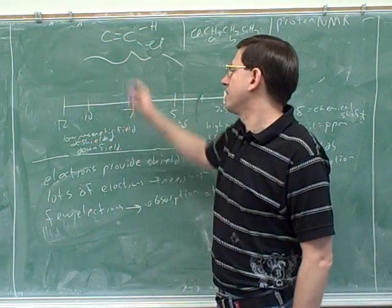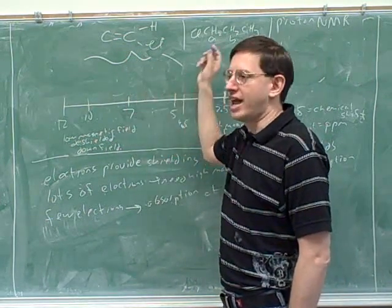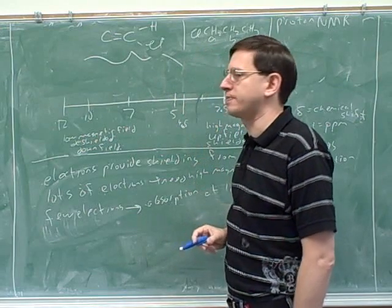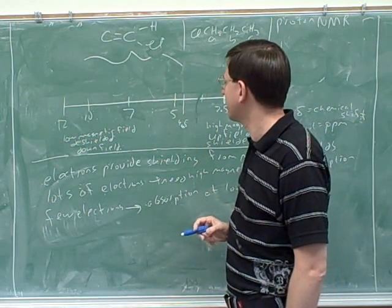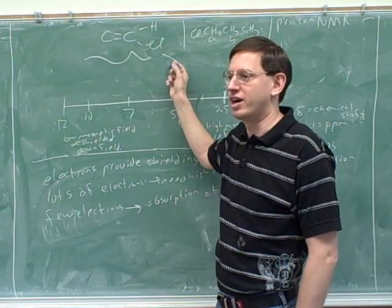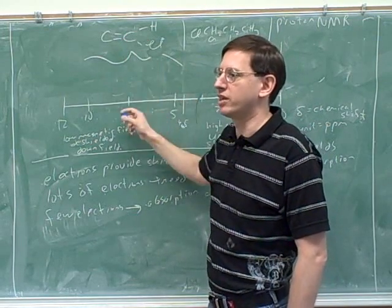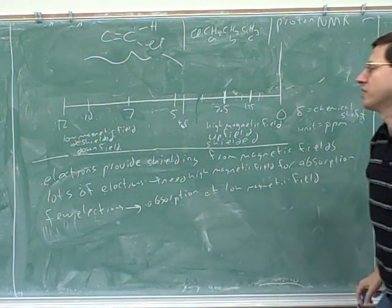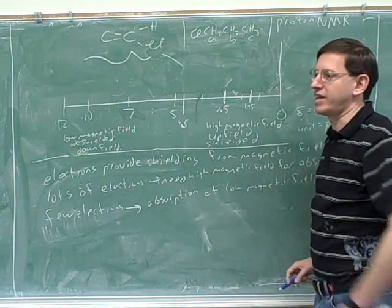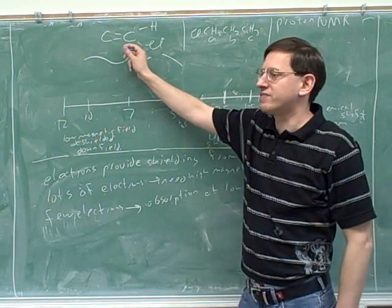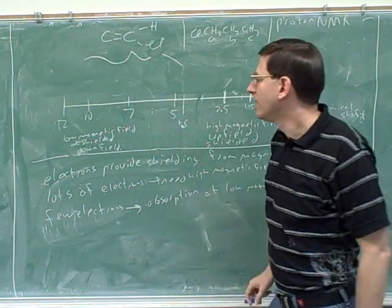So you can see alkene hydrogens absorb at lower field than alkane hydrogens. And there's an explanation in your textbook for why that is, but we're not going to go over that today. So we'll just memorize alkene carbons absorb at a lower field than alkane. So again, the right-hand part of the spectrum is basically the alkane hydrogen side, and the left-hand side is basically the alkene.